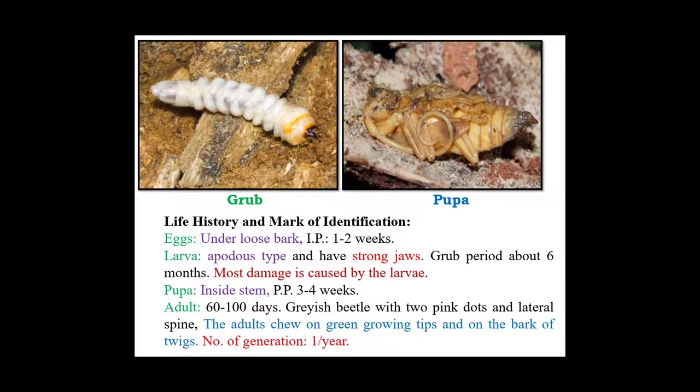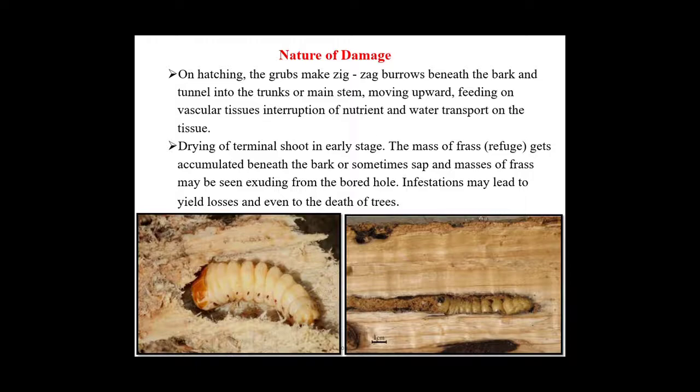Regarding life history and identification: oviposition takes place under the loose bark. The larva is apodus type and has strong jaws. Most damage is caused by the larva. Pupation takes place inside the stem. Adult development completes in 60 to 100 days. Adults chew on green growing tips and bark of twigs. There is one generation per year.